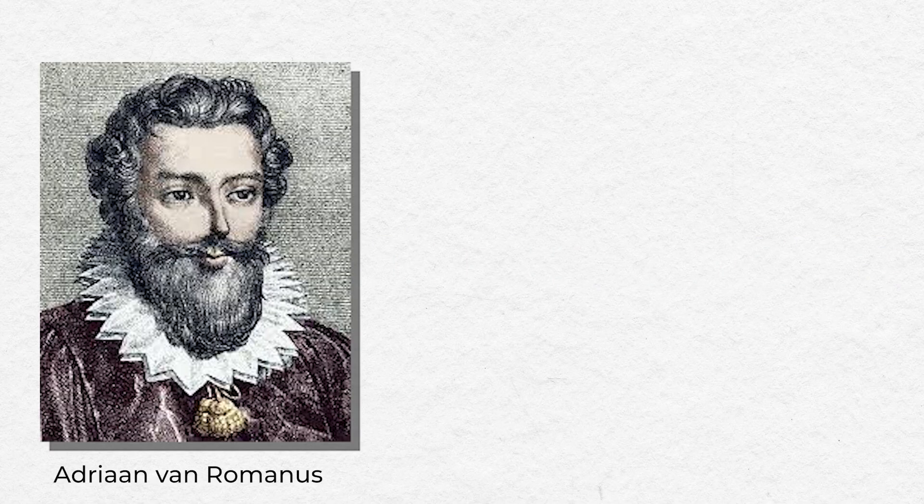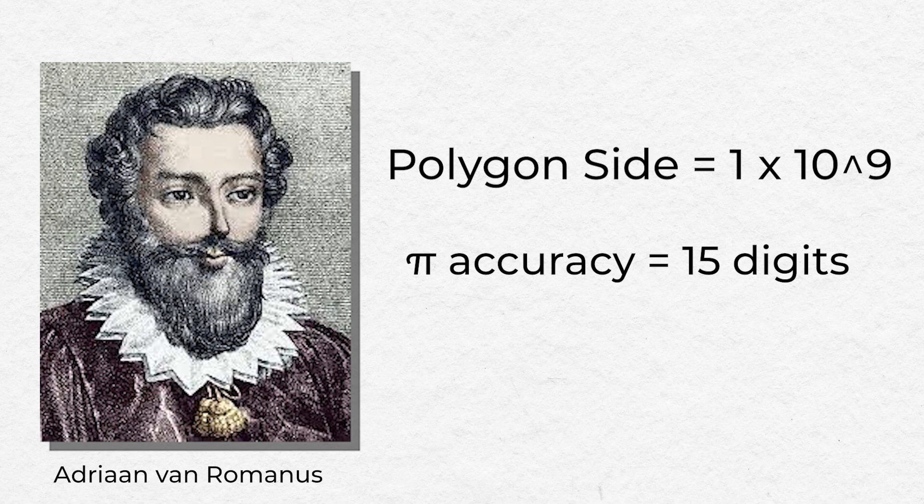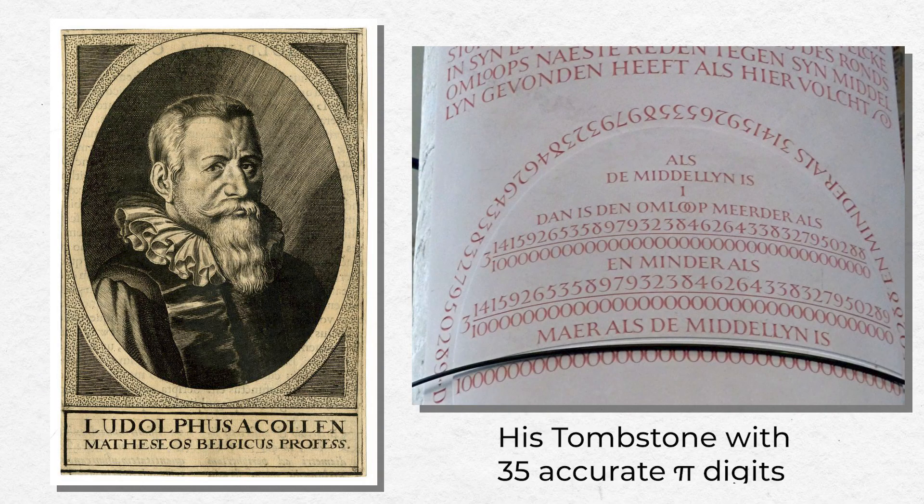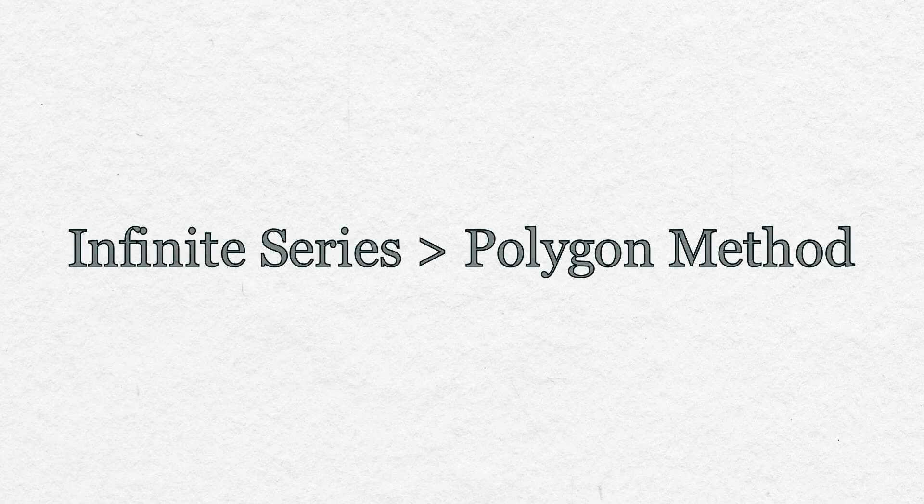People took the number of sides of a polygon used to the next level for more accuracy. Like Romanus, doing it for polygons with about a billion sides, and Ludolph van Ceulen, taking it a step further for a polygon with 480 billion sides. This polygon approximation method of pi only became second to the infinite series of pi.